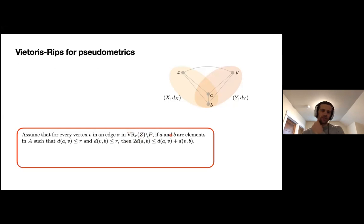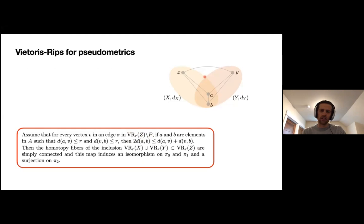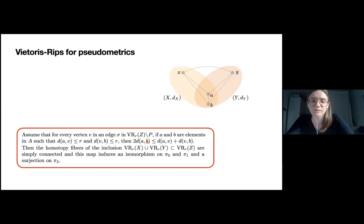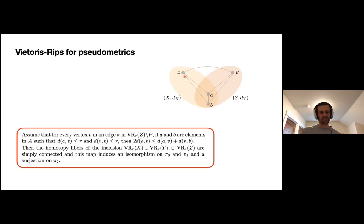Is this bound — twice the distance between a and b — essentially implying that the triangle, or the tetrahedron, gets filled in? It's saying that the edge xy is also part of the triangle, but a bit stronger, because of this factor of two. Cool, thanks.